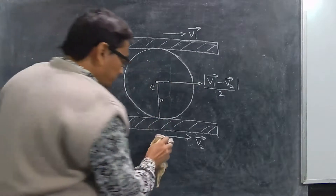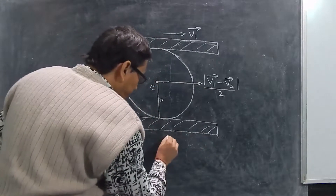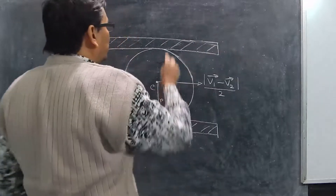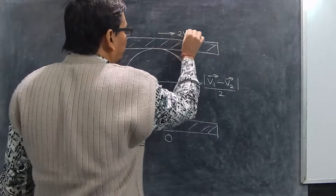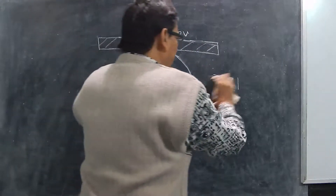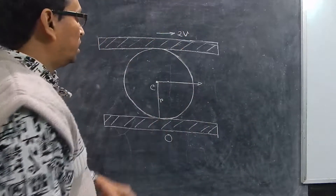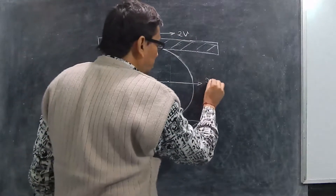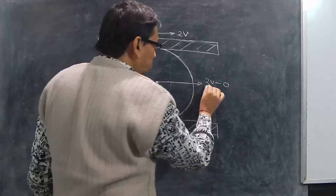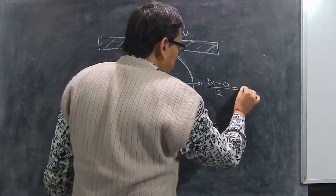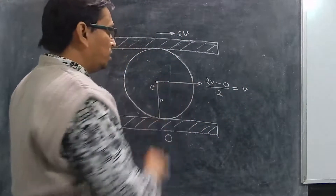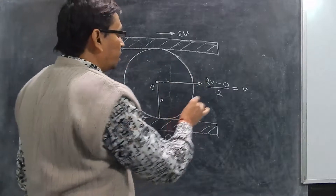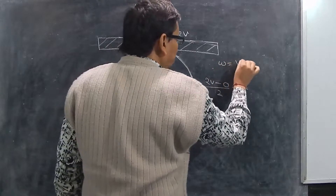For example, suppose one plank is moving with velocity 0 — so it is not moving — and the other plank is moving with velocity 2V. We have to find the relative velocity between these two. It is moving 2V and this is moving with velocity 0, so the relative velocity will be 2V minus 0 divided by 2, giving you V. So this V will be the velocity of the center of mass, and from that we can find omega, which will be equal to V by R.